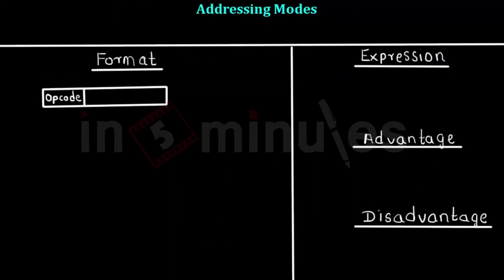Now let's look at displacement addressing mode. In this mode, the operand field is divided into two parts: a register address and a memory address. The memory address here is not the address of the operand; instead, it acts as the base address, and the value in the register is added to this base address to calculate the actual effective address of the operand.